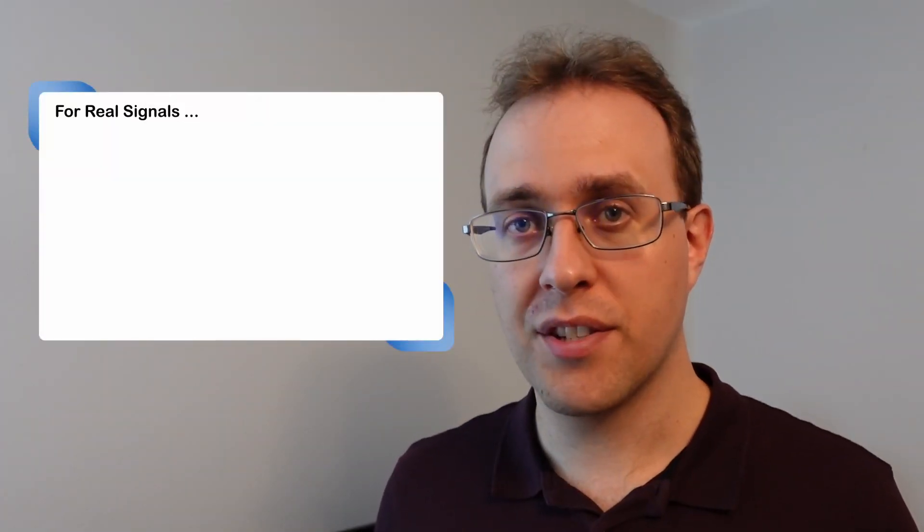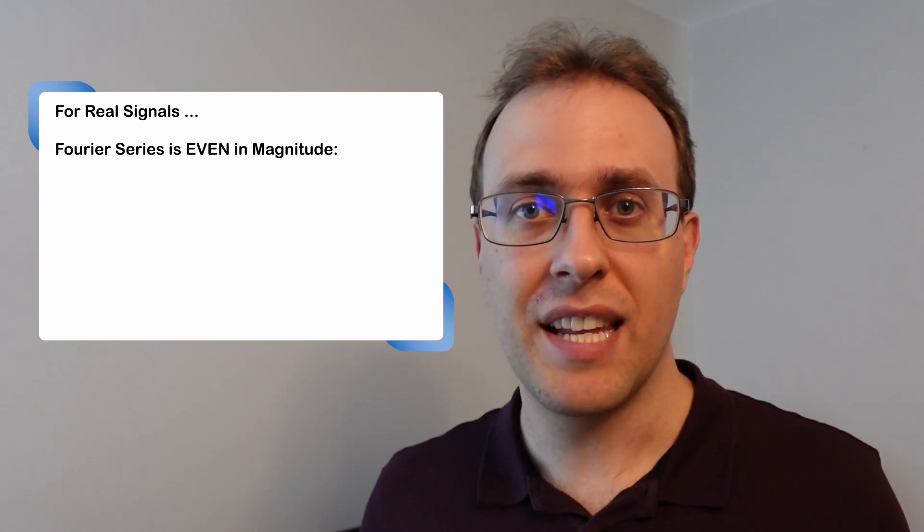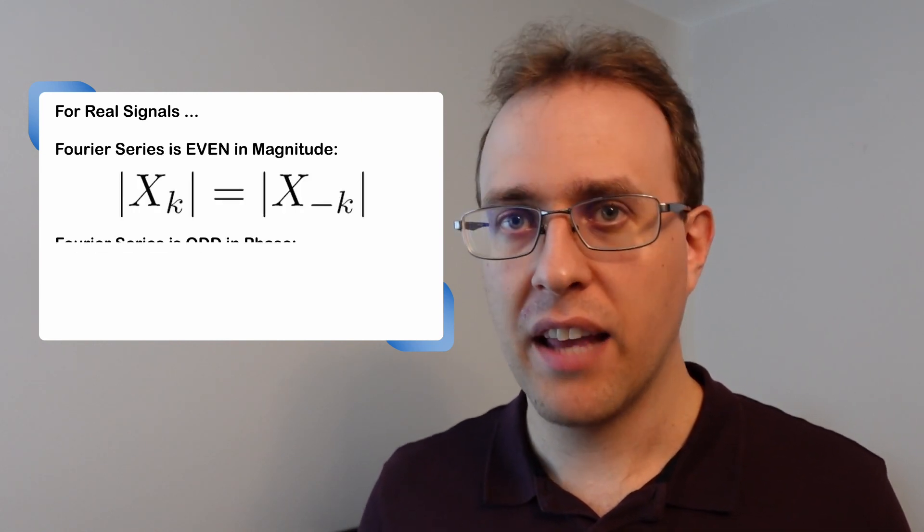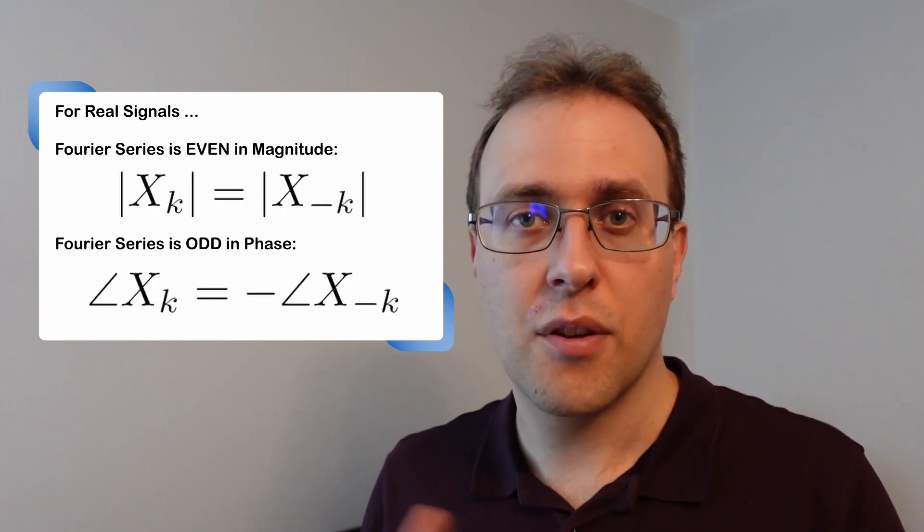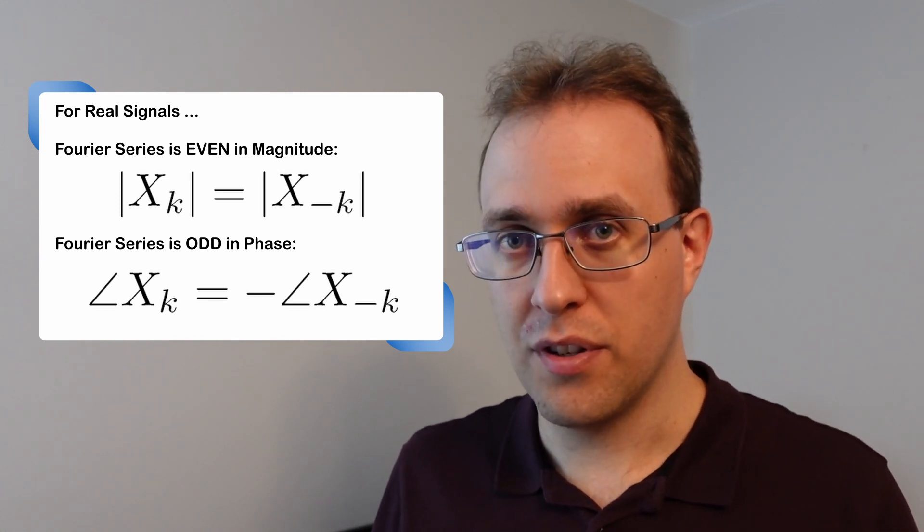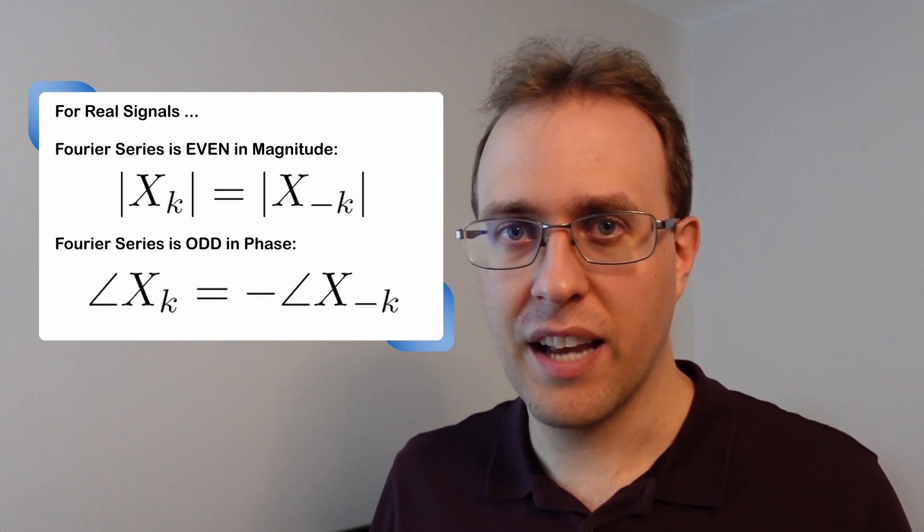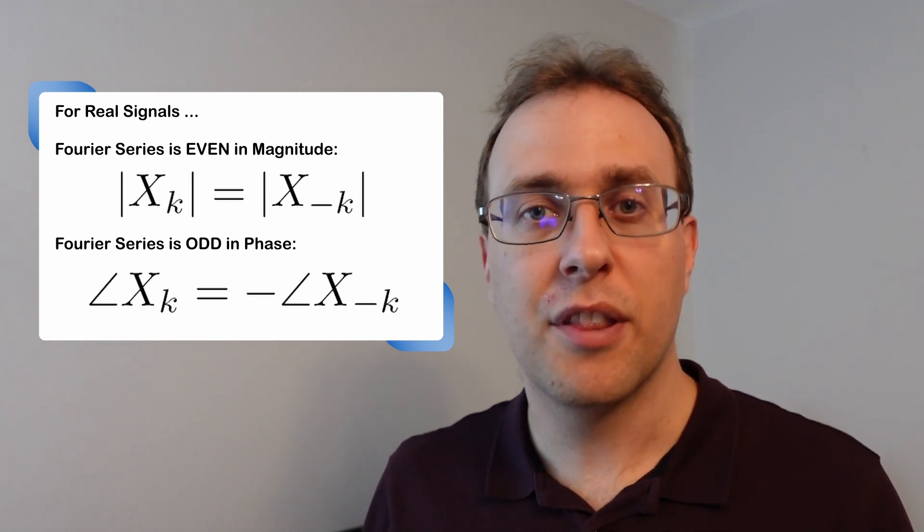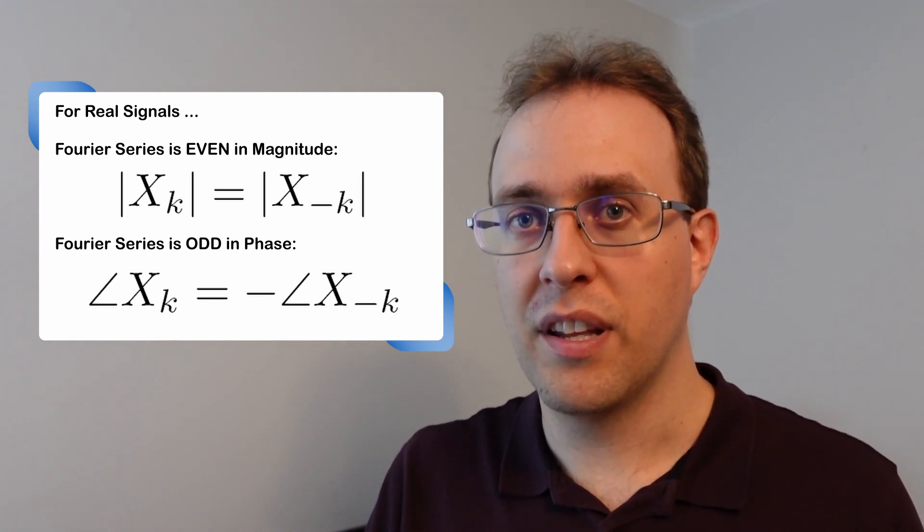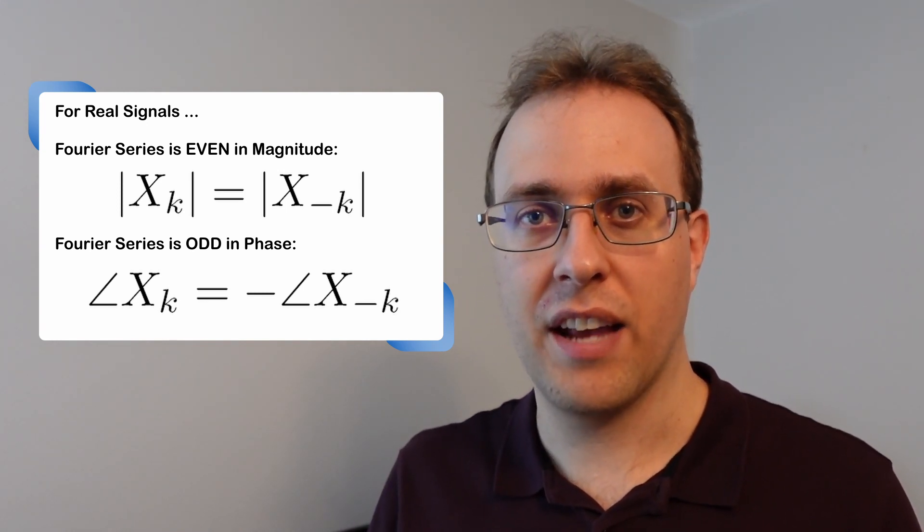It also turns out that the Fourier series of a real signal has an even magnitude spectrum and an odd phase spectrum. So the magnitude of the index k coefficient is equal to the magnitude of the index negative k coefficient, but the phase of Xk is equal to the negative of the phase of X negative k.